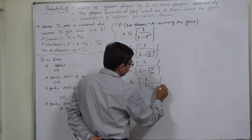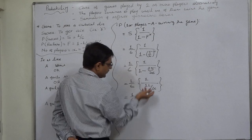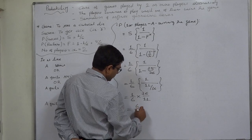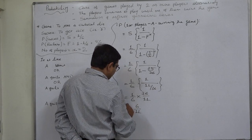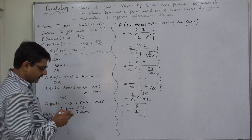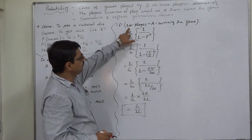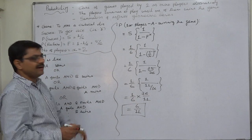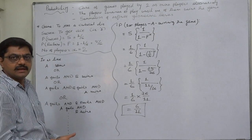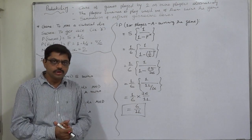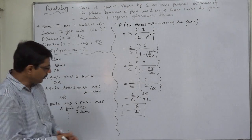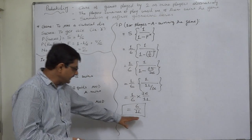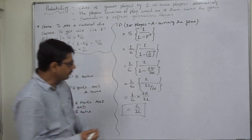So it becomes (1/6) × (36/11) = 6/11. Therefore the probability that the first player — whoever starts the game — wins is 6/11. Since any one of the two players must win, these are mutually exclusive and exhaustive events. So the probability of the second player winning is 1 − 6/11 = 5/11.